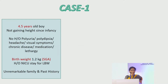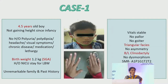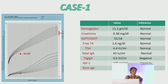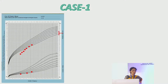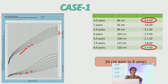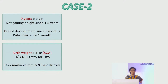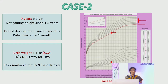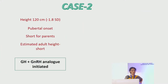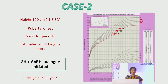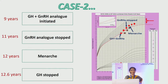A case example: a 4.4-year-old boy not gaining height since infancy, with birth weight of 1.2 kg, triangular face, and clinodactyly. His height was minus 4.6 standard deviations. Once growth hormone therapy was started, his height moved to almost the 10th percentile. Another case: a nine-year-old girl with SGA and no catch-up growth, with early pubertal onset, was given growth hormone plus a GnRH analogue, and she gained height.